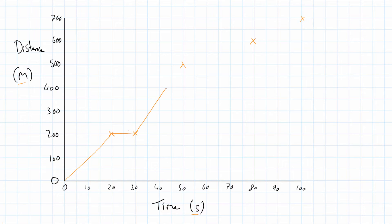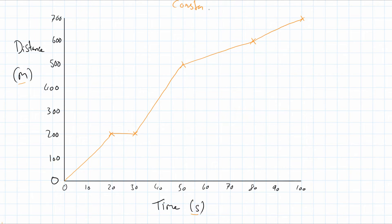There are a few aspects you need to recognize. If you have a straight line on a distance-time graph, that indicates constant speed. That's because over time the amount of distance covered is not changing — you keep covering the same amount of distance per given time, and that's what constant speed is.